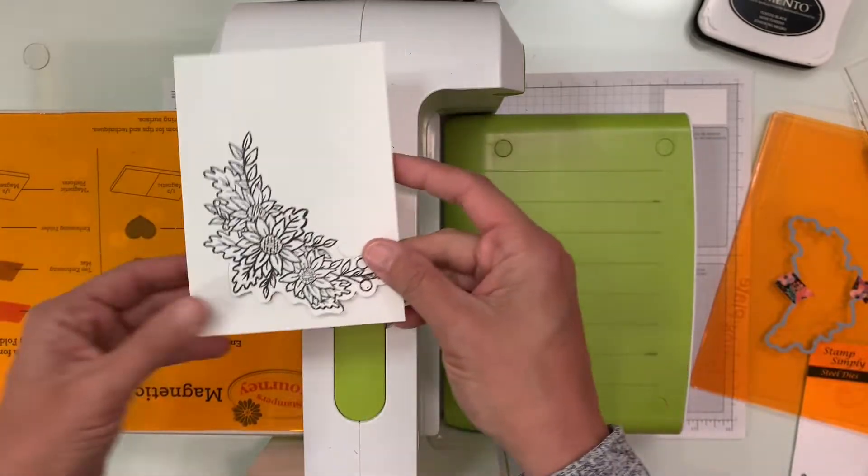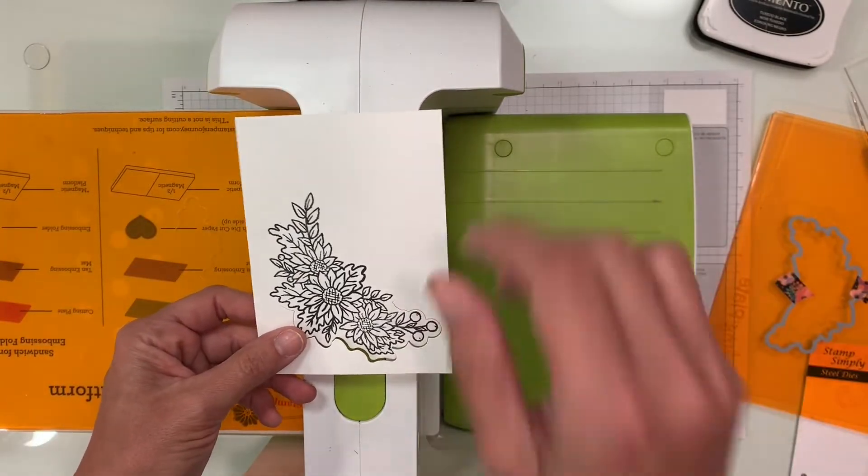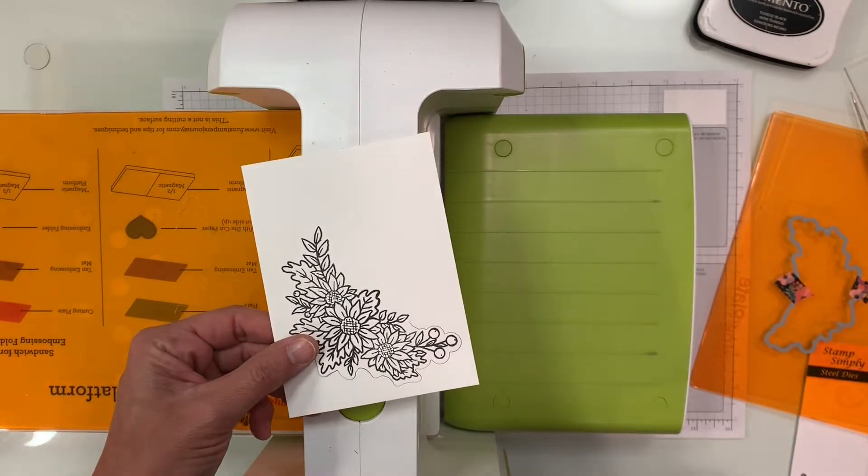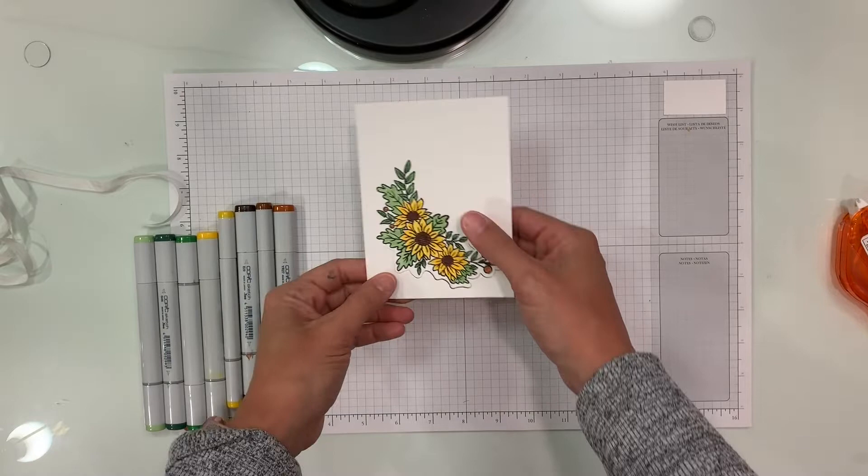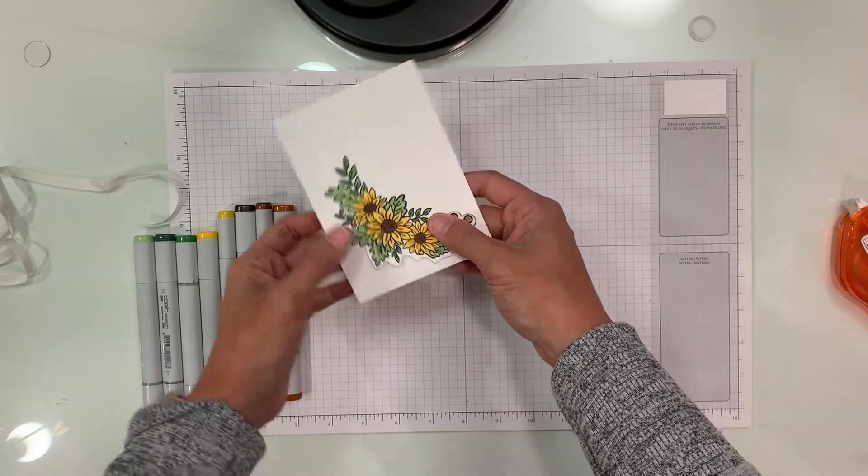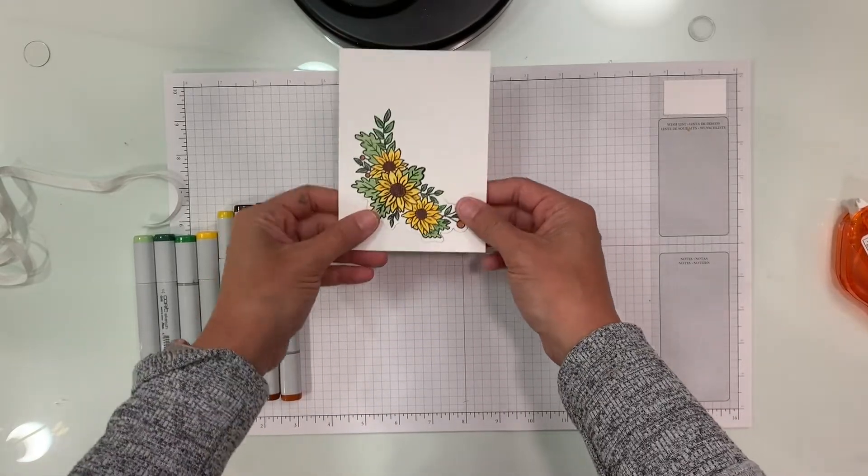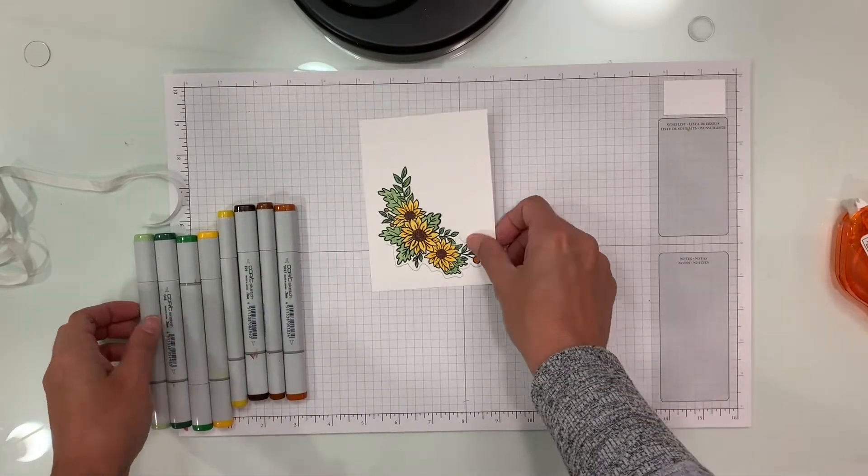So what we're going to do is I'm going to go ahead and move my die cutting machine out of the way so we can finish up the card. Okay, so I've taken this partial die cut image and I've colored it for you in an effort to save a little time in the length of the video.